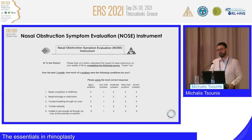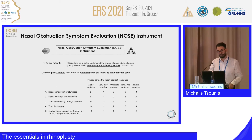An even more simple and specific subjective instrument is the Nasal Obstruction Symptom Evaluation (NOSE) instrument. This consists of five questions — patients grade the severity of five different symptoms. The score is multiplied by five to give a final score with a maximum of 100.